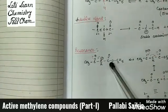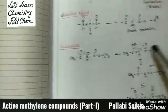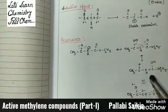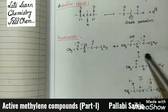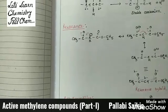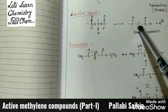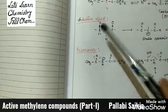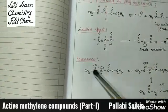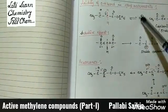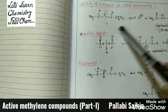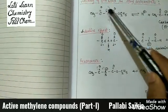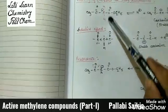Secondly, the negative charge of the carbanion is delocalized in the two carbonyl groups through resonance. There is one resonating structure, a second resonating structure, and together they form the resonance hybrid. So this carbanion is highly stable through inductive effect and resonance, and hence the proton can be easily lost. This explains the acidity of these hydrogens of the CH2 group.